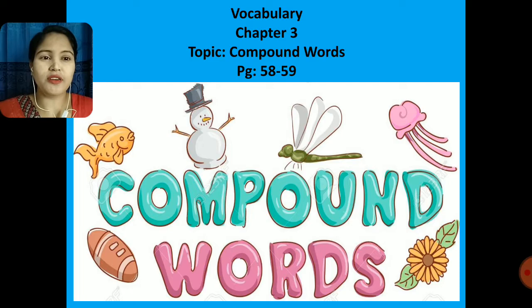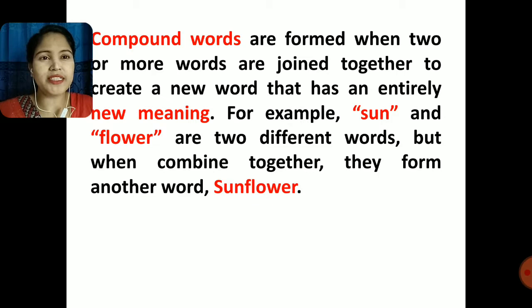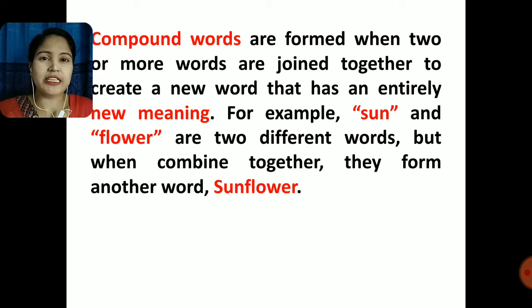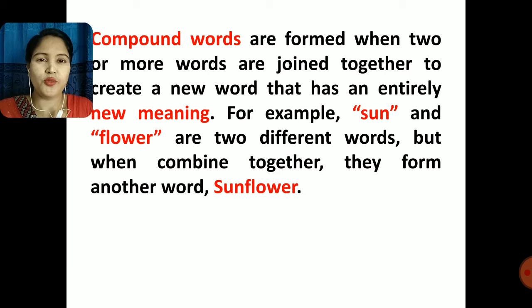So today we learned compound words. What is called compound? Compound words are formed when two or more words are joined together to create a new word that has an entirely new meaning. For example, 'sun' and 'flower' — these two words have different meanings and different spellings, but if we join them together we find a new word: sunflower.